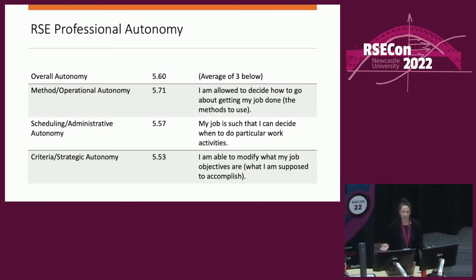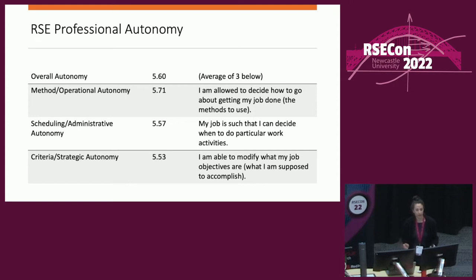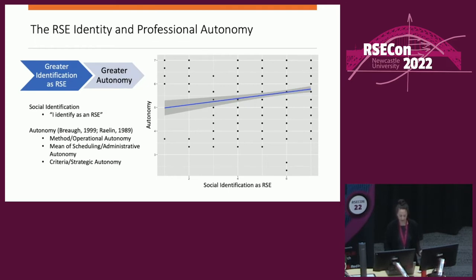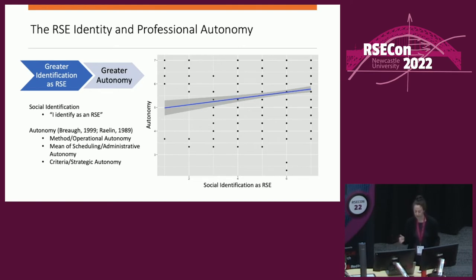I'll now go over some findings with relation to autonomy. We found three different forms of autonomy, and our respondents had a fairly high level of autonomy. These different forms of autonomy did not differ significantly, so RSEs appear to be enjoying a relatively high level of all three forms. We found that greater identification as an RSE predicted a higher level of autonomy across all three types and in the aggregate.